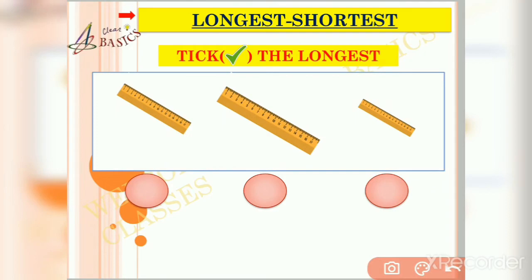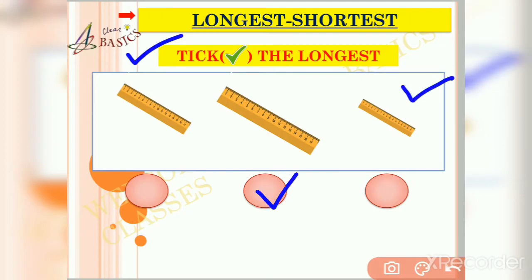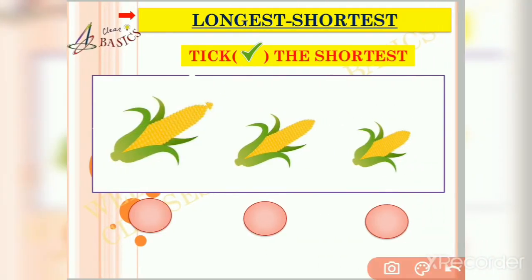Now let us come to the exercise part. Here in this picture we can see three rulers. Please try to identify by yourself which one is the longest and which one is the shortest — you can pause the video to think. The answer is: the middle one is the longest and the leftmost ruler is the shortest. Now in the next picture there are three cones. Can you tell me which one is the shortest? Yes, the rightmost cone is the shortest among the three.